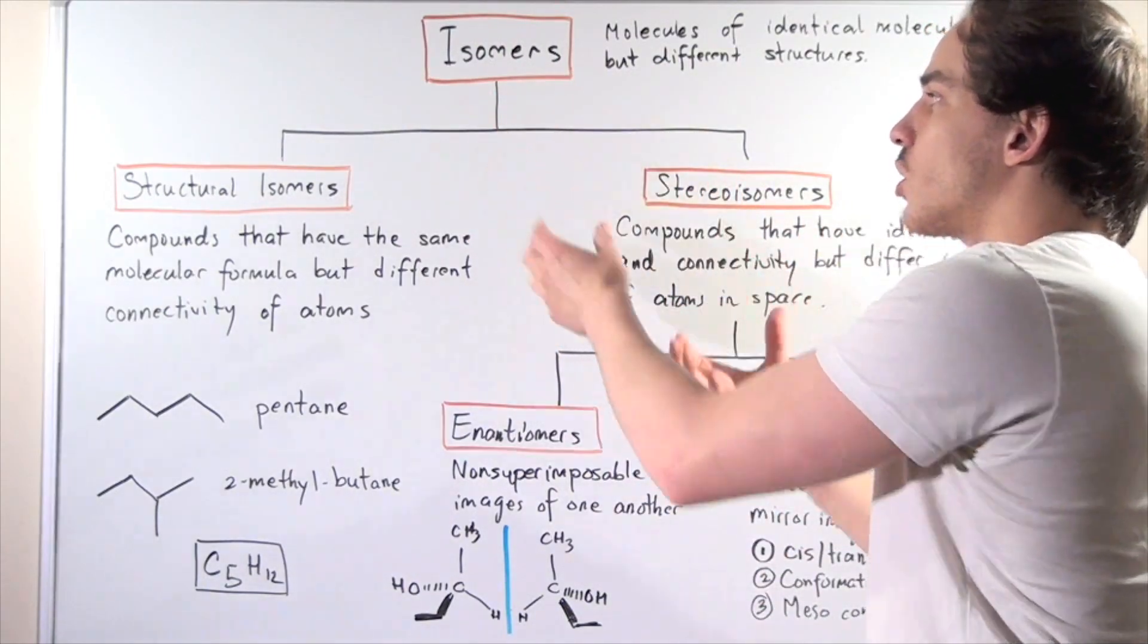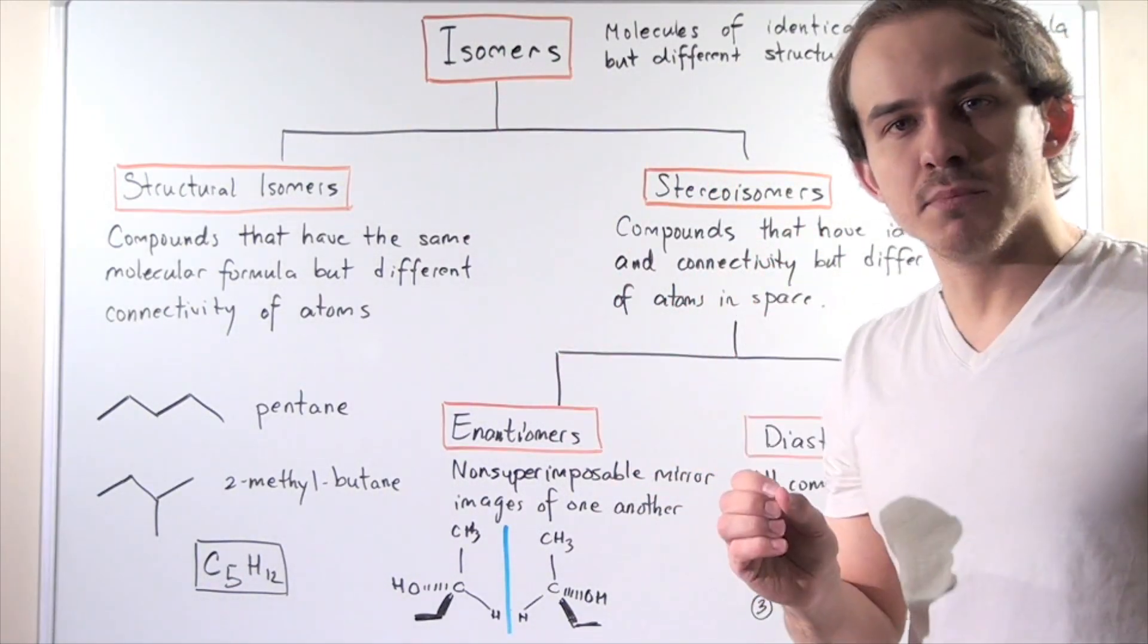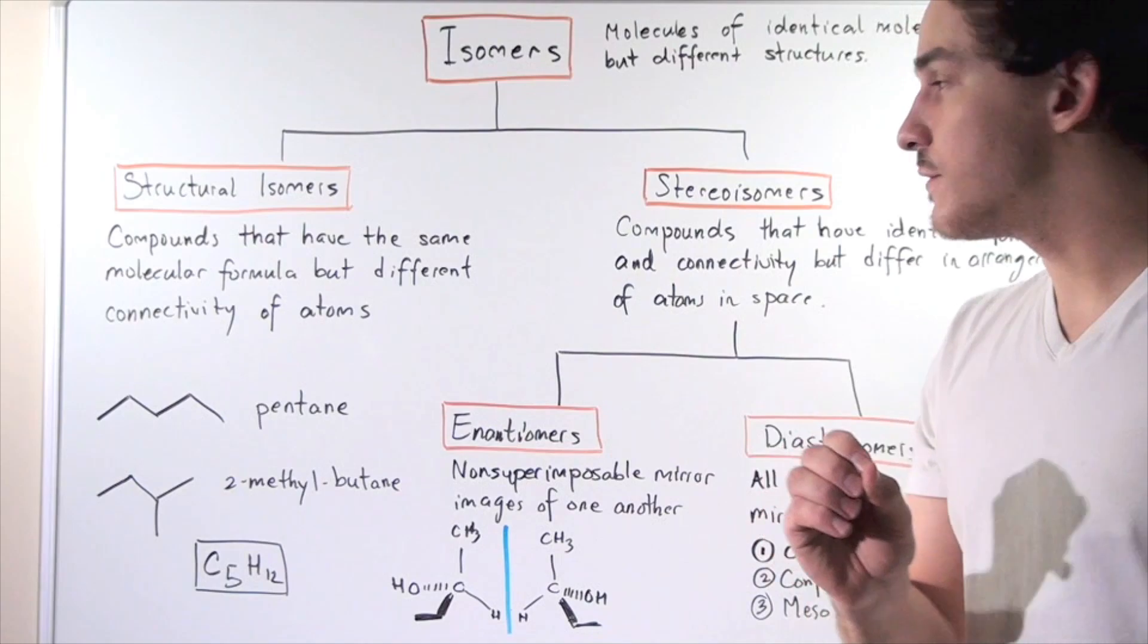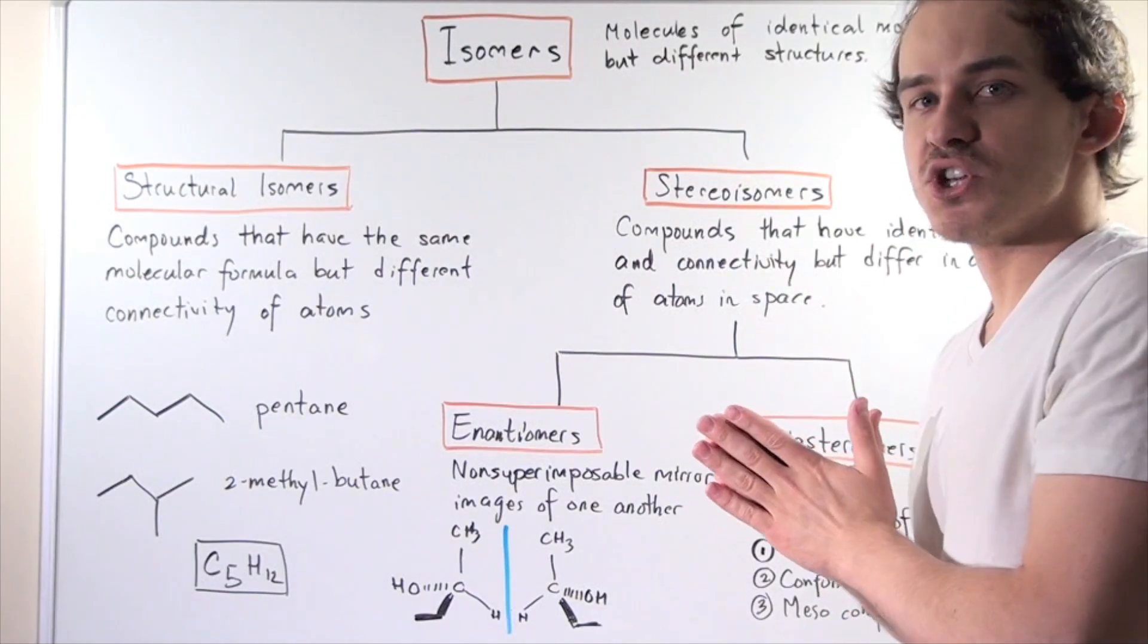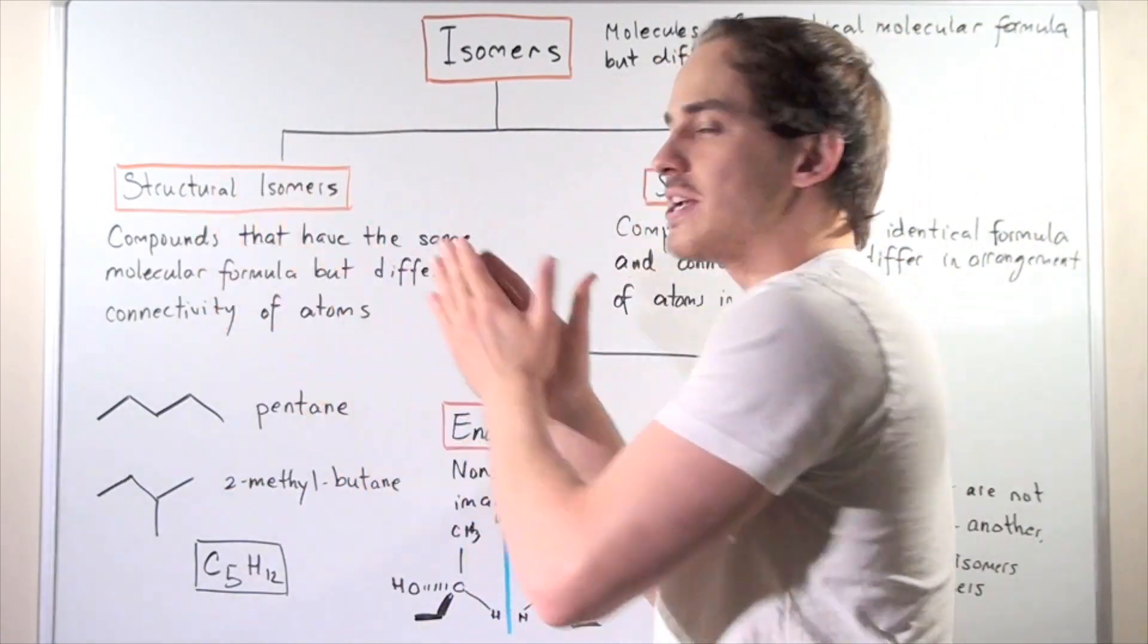Stereoisomers and isomers - these two words are usually used interchangeably, but you should know the difference. There's a big difference because isomers can be subdivided into stereoisomers as well as structural isomers.